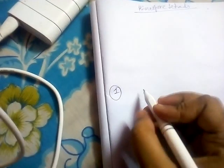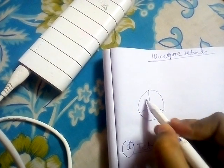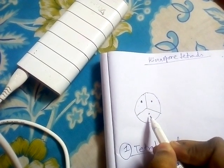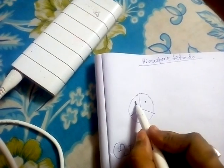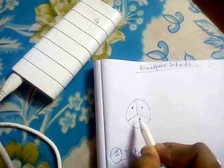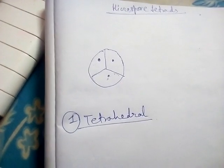Today I will discuss about the types of microspore tetrads. The first type is the tetrahedral form. In tetrahedral form, four microspores are arranged such that three microspores are positioned together and the fourth one is present just at the back side of the third one. This is the tetrahedral form of microspore tetrads.